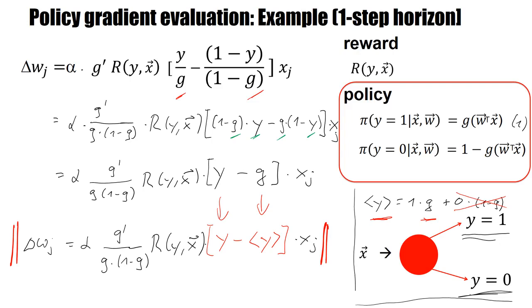Now this allows nice interpretations. And I will go over the interpretation on the next two slides. So I have some factor here in front. And then I have the reward. And then I have the actual output minus the mean output or expected output. And this is the input. So let's look at these terms.